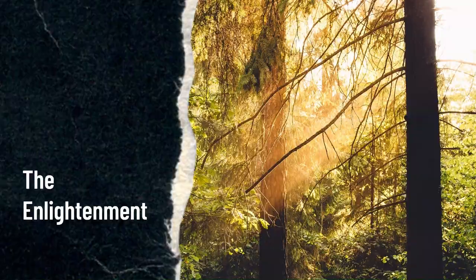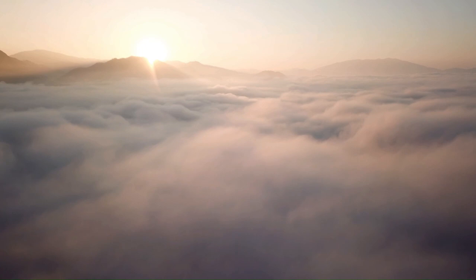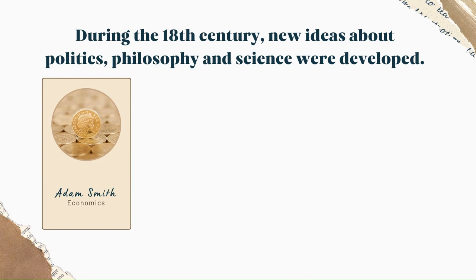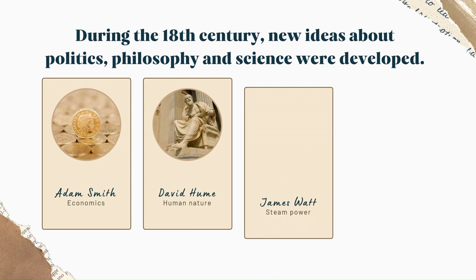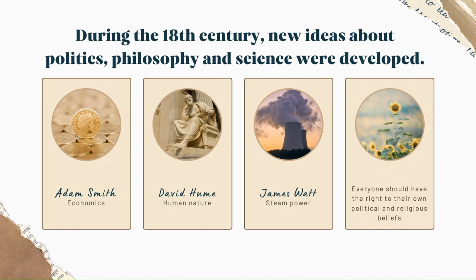The Enlightenment. During the 18th century, new ideas about politics, philosophy, and science were developed. This is often called the Enlightenment. Many of the great thinkers of the Enlightenment were Scottish. Adam Smith developed ideas about economics which are still referred to today. David Hume's ideas about human nature continue to influence philosophers. Scientific discoveries, such as James Watt's work on steam power, helped the progress of the Industrial Revolution. One of the most important principles of the Enlightenment was that everyone should have the right to their own political and religious beliefs and that the state should not try to dictate to them. This continues to be an important principle in the UK today.